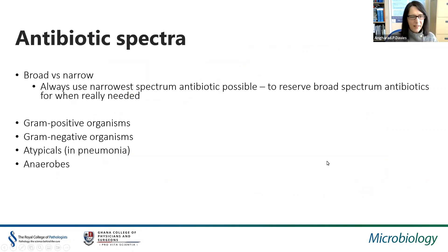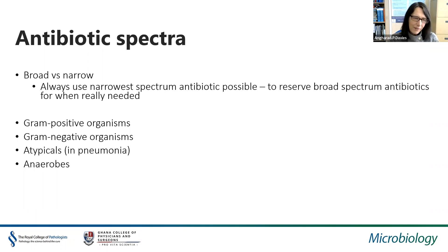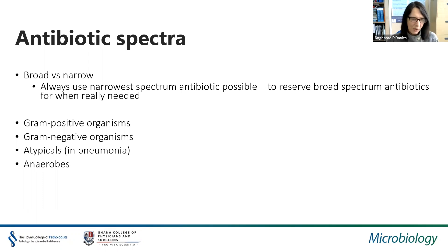Some antibiotics are broad spectrum, covering a wide range of bacteria; others are narrow spectrum. We always want to use the narrowest spectrum antibiotic we can, reserving broad spectrum antibiotics for when they're really needed, to avoid generating antibiotic resistance and disrupting the patient's microbiota more than necessary. When thinking about antibiotic spectra, it's useful to consider coverage of gram-positive organisms, gram-negative organisms, atypical pneumonia organisms, and anaerobes.